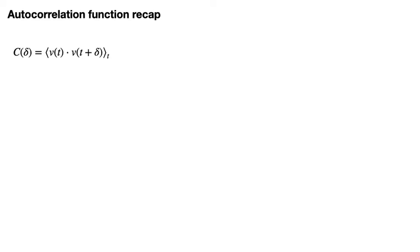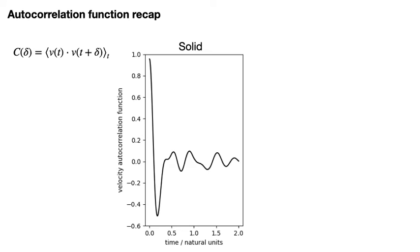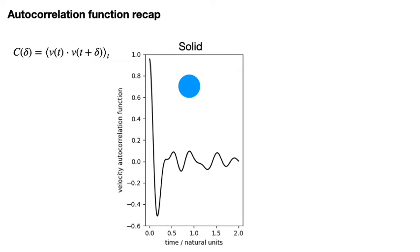In my last video I explained that the autocorrelation function for solid materials will often look like the graph shown here. Solid materials display correlations over long timescales because the atoms in solids oscillate along particular directions and vibrate around their lattice sites. In contrast, the velocity autocorrelation function for a liquid might look something like this. There is no evidence of long timescale correlation for the atoms in a liquid as the particles are free to diffuse around freely as the cartoon with the red atom here shows.